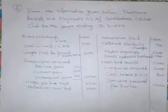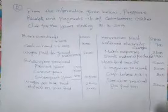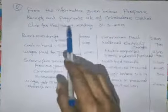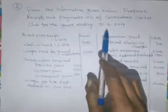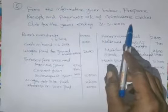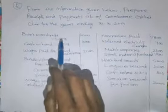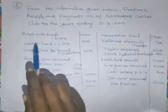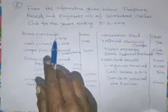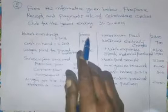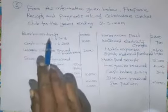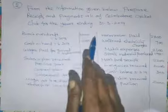Now let us move on to the second problem. From the information given below, prepare Receipts and Payments Account for Coimbatore Cricket Club for the year ending 31st March 2019. Bank overdraft — unfavorable balance. Bank overdraft on 1st April 2018: Rs. 6,000. This is shown on the Receipts and Payments Account on the payments side.